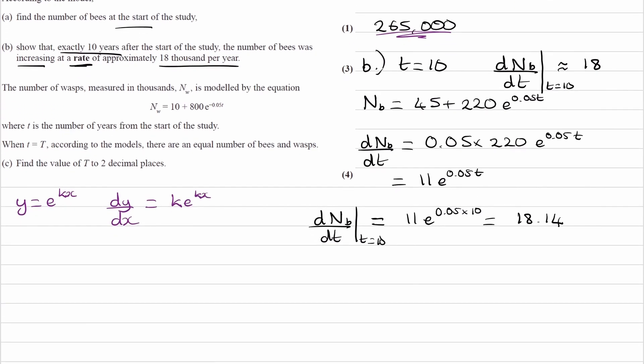Now, this is in thousands. So that means dnb/dt is changing by approximately 18,000 per year. We know it's increasing because this number is positive. If the number were negative, that means the number of bees is decreasing at a rate of 18,000 per year approximately.